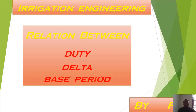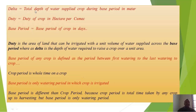In this video tutorial we will learn some basic concepts from irrigation engineering — the relation between duty, delta, and base period. First we'll define these terms. Delta is the total depth of water supplied to the crop during its base period, in meters. Duty is the area of land that can be irrigated with a unit volume of water supplied across the base period, in hectares per cumec.